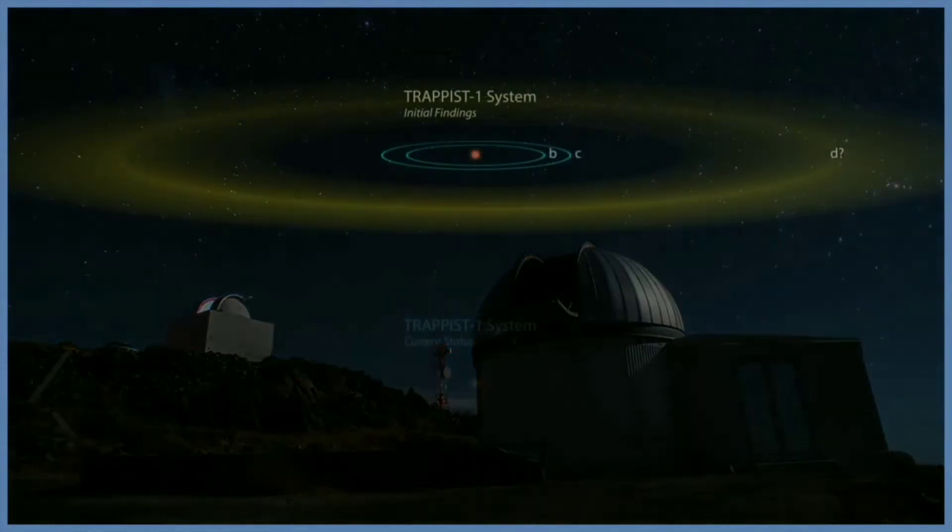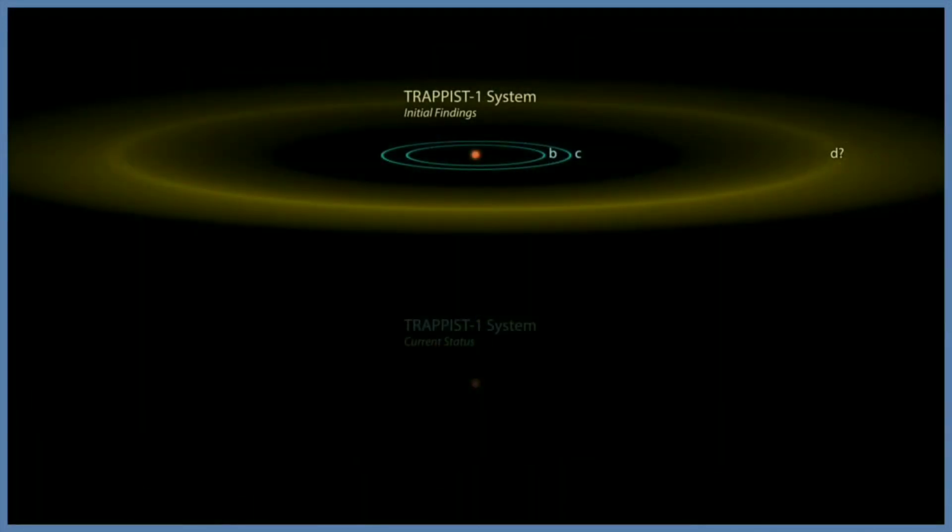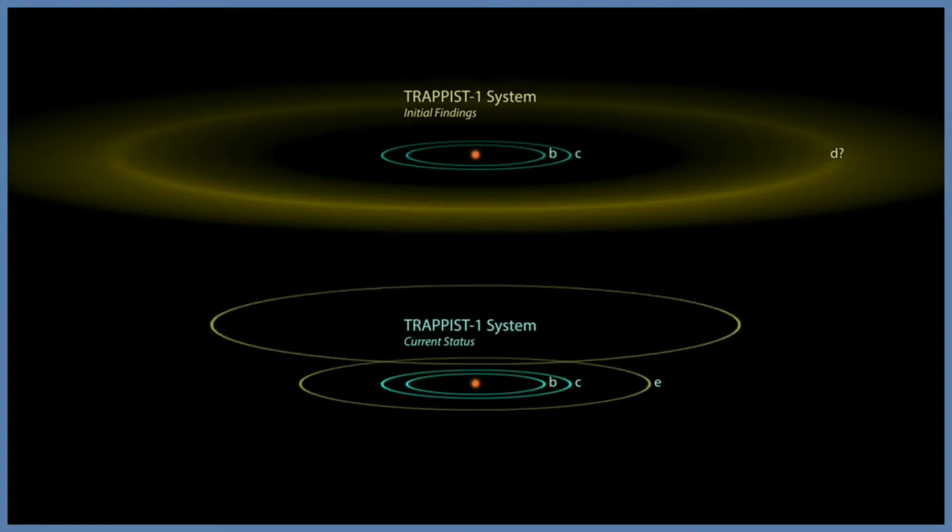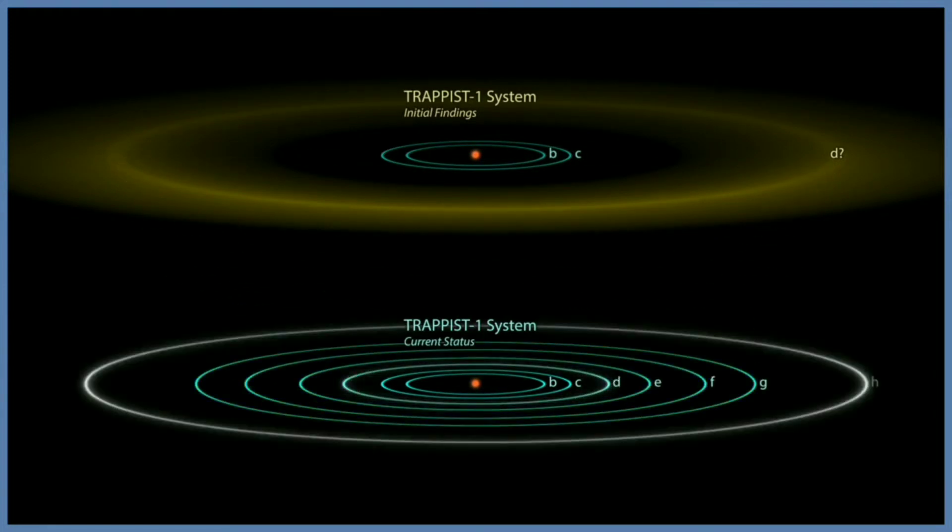In May 2016, researchers at this telescope discovered three exoplanets in this system. Later on, other telescopes like the Spitzer Space Telescope confirmed the existence of two of these planets and discovered five more planets in their results. This increased the system to seven planets.